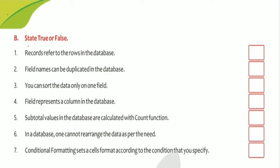Seventh: conditional formatting sets a cell format according to the condition that you specify — that is True. Summary of True/False answers: First true, second false, third false, fourth true, fifth false, sixth false, and seventh true.